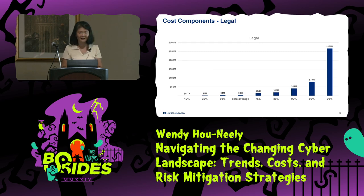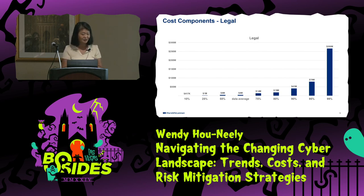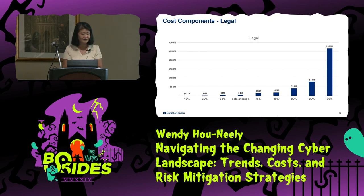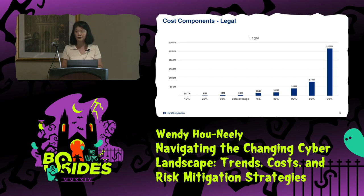Everybody keeps asking me: how much is legal? How do you model legal? Legal on a data average is about $4 million based on what we're seeing, and the 99th percentile is about $266 million. Legal is a big chunk of cyber event cost, because even if they don't breach your data — even if they just touch the data — you still need to talk to legal counsel to determine what you have to do to be compliant.